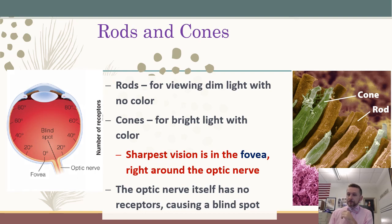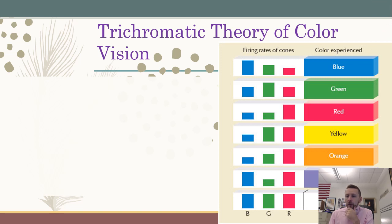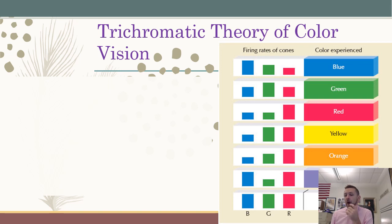Cones fire at different rates based on the wavelength of light that strikes them. Each color of light has a different wavelength. When cones fire with heavy blue, a little green, and very little red, that is experienced as blue because blue dominates. Heavy green produces the experience of green, and then red. Combinations of blue, green, and red produce the other colors: very little blue but equal amounts of green and red means experiencing yellow. Blue with very little green and more red is purple, and all of them firing together produces white, since white is the combination of all colors.